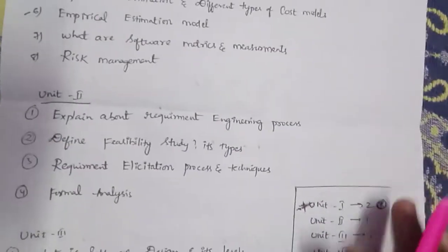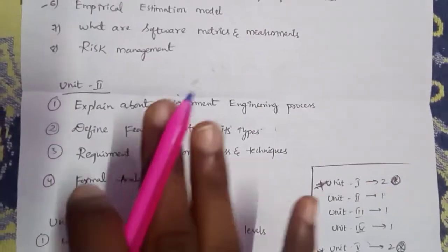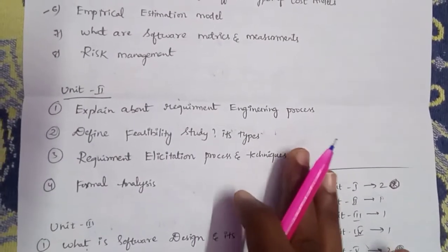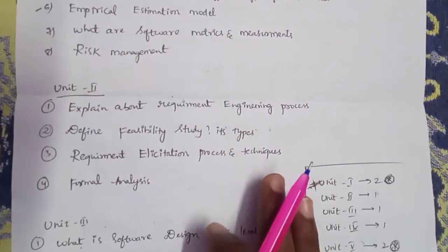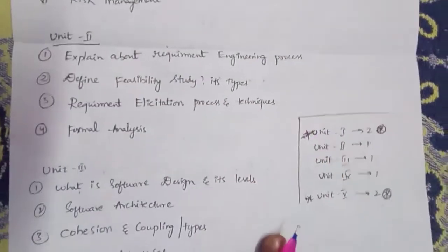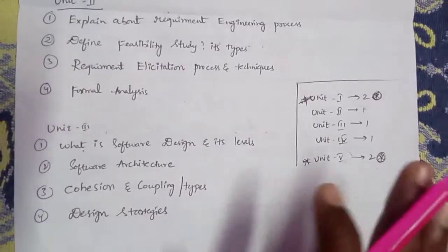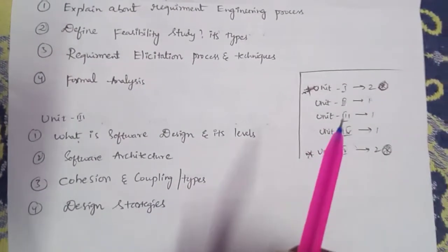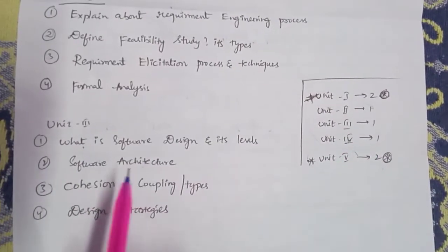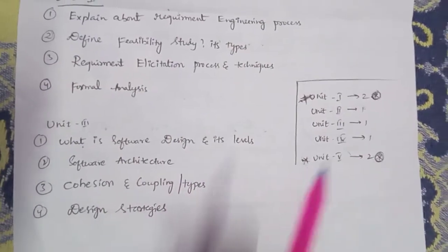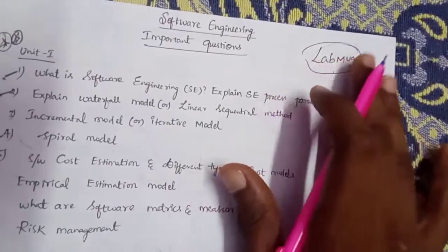You will find some important questions about risk management, process and techniques, and formal analysis. Coming to Unit 2 and Unit 3, topics include four major areas: software design and its levels, software architecture, cohesion and coupling types, and design strategies.